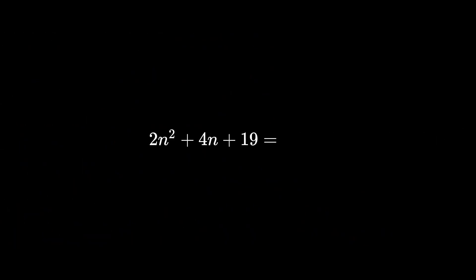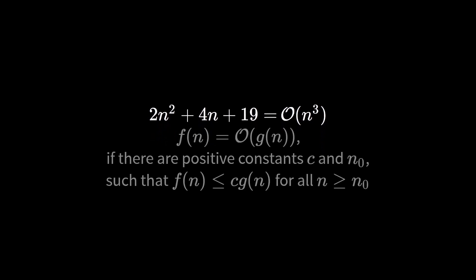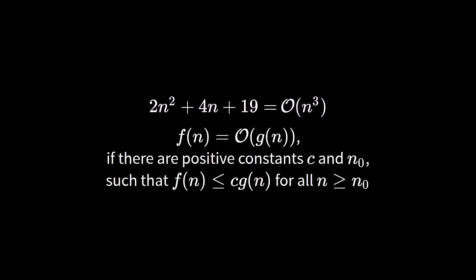Let's focus on a running time once more — this is of course big O of n squared. But what if I told you that it is also big O of n cubed? If we look again at the definition of big O notation, we notice that there is a less than or equal sign. So if f of n is big O of g of n, this just means that f of n increases at most as fast as g of n. And since 2n squared plus 4n plus 19 is big O of n squared, it also grows at most as fast as big O of n cubed, which grows faster than n squared.